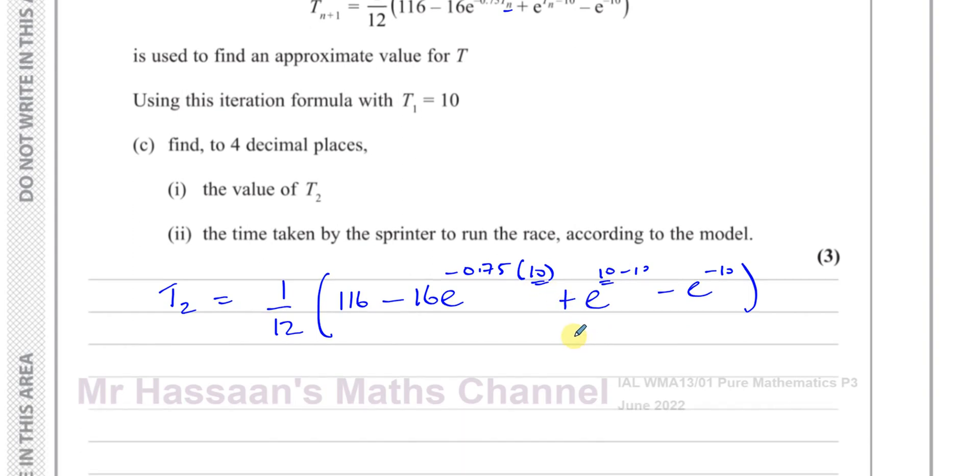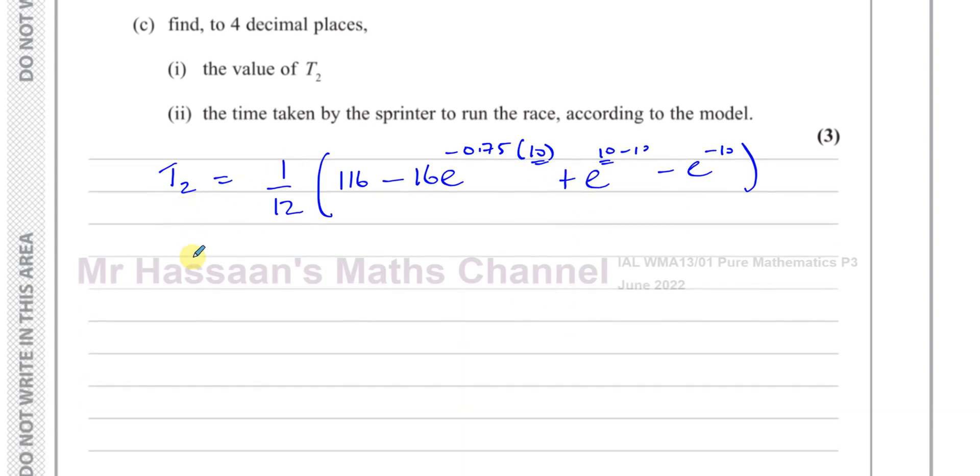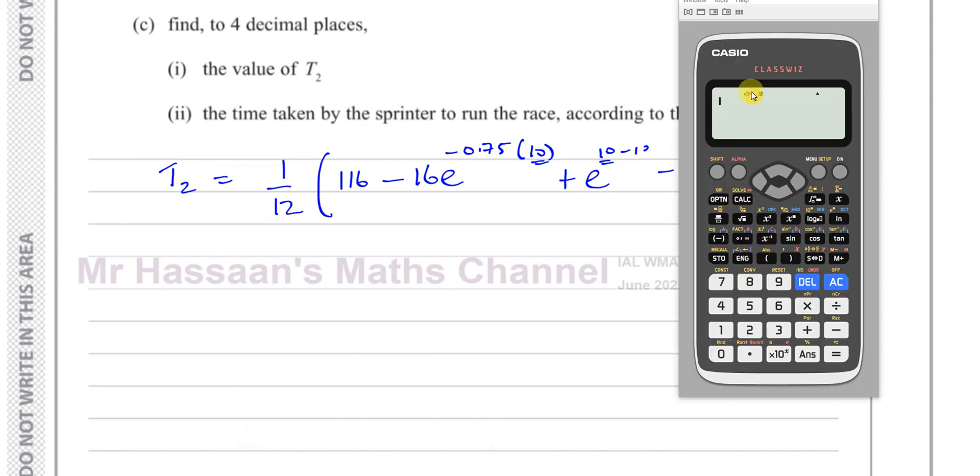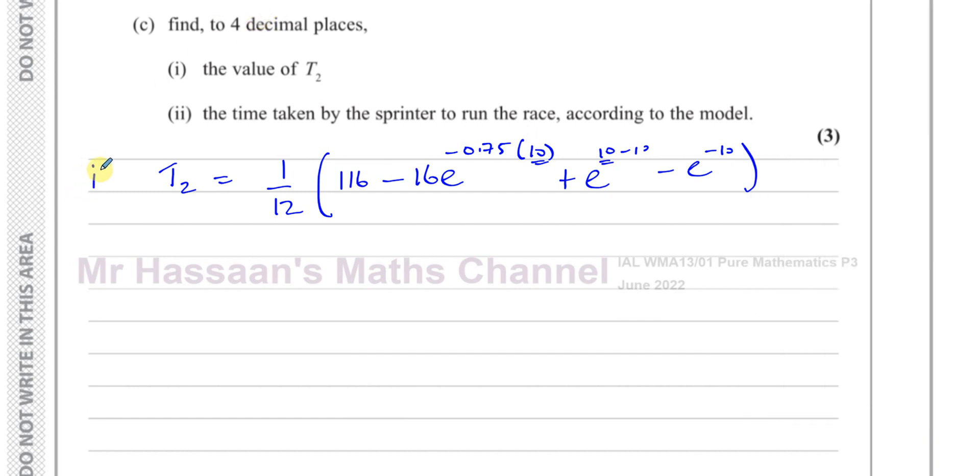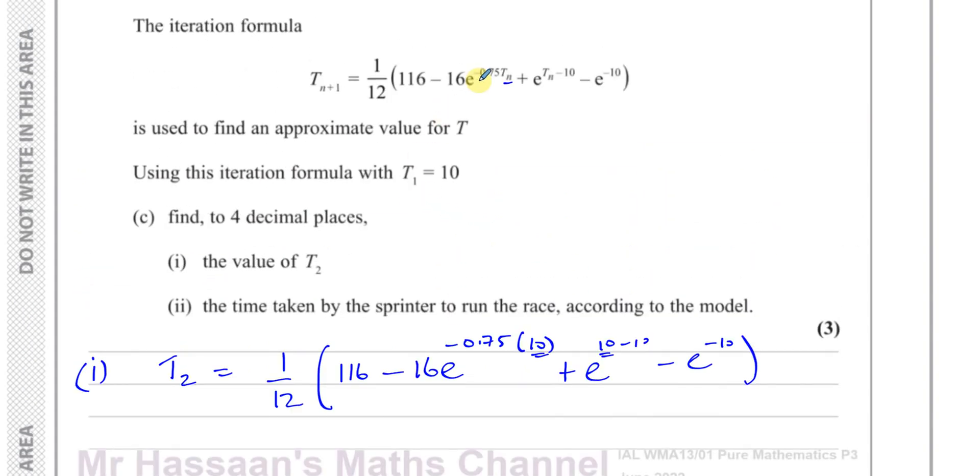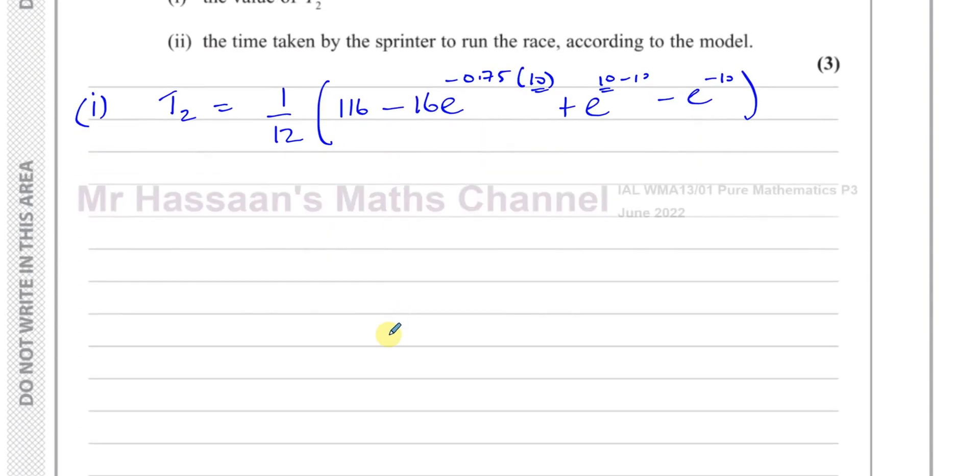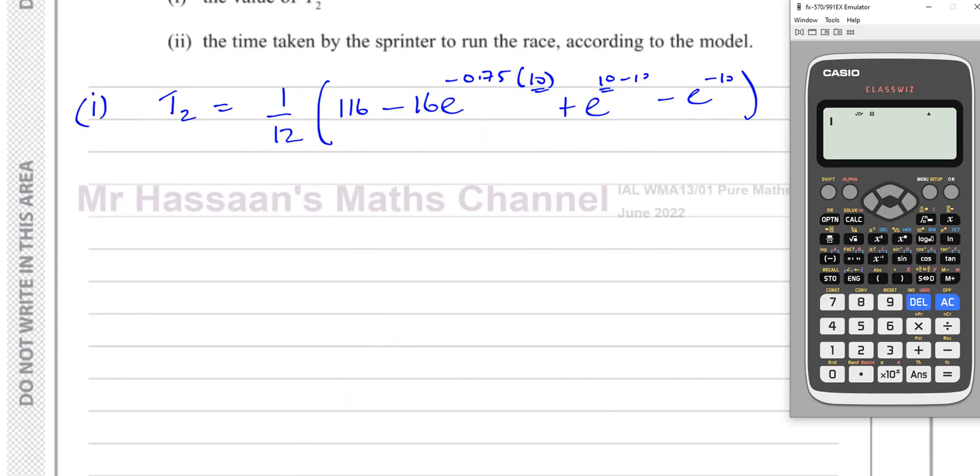Now, how do we deal with this? We can set this up in our calculator to make all the subsequent answers really easy. So I'll show you how we can do that. Because for part two, we're going to have to continue the iteration. What I want to do is when T_2 comes out, I'm going to put T_2 back into this formula to find T_3, and then when T_3 comes out, I'm going to put T_3 back into this formula to find T_4 until I have found an accurate answer.